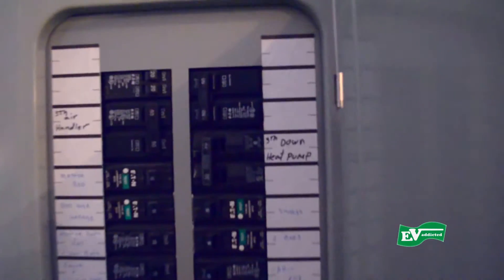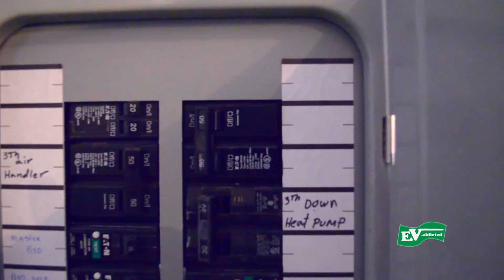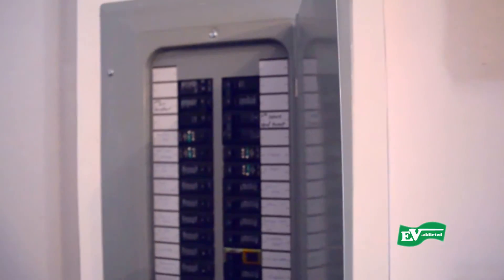Here at the breaker panel, you need a space for the double 50 amp breaker. You can see it here on the top right corner, the 50 amp switch.